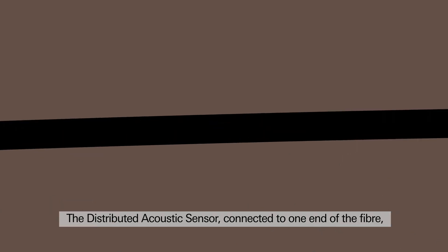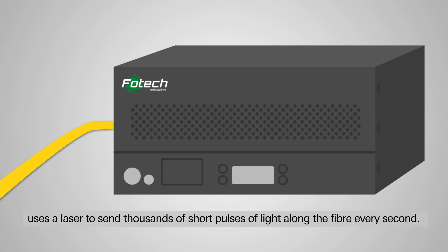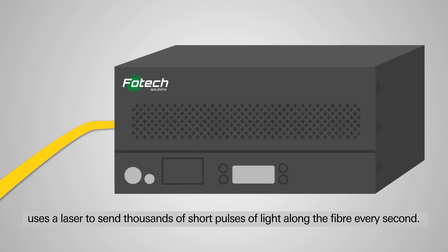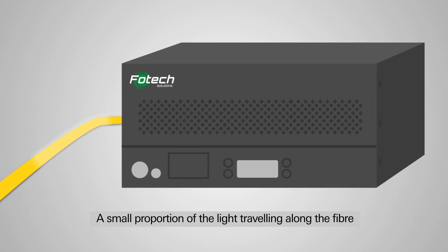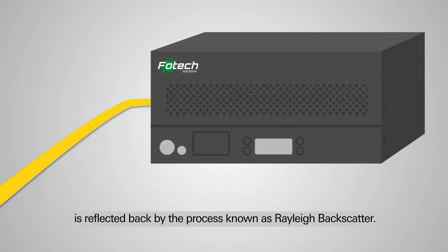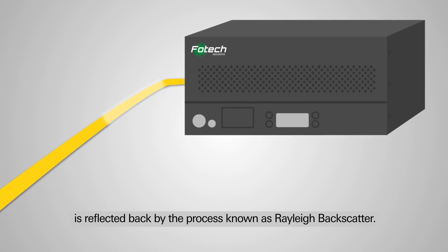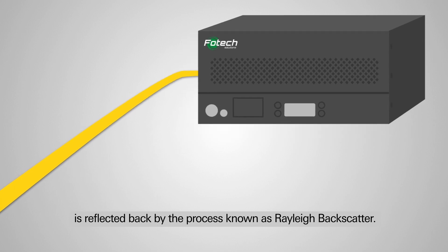The distributed acoustic sensor, connected to one end of the fibre, uses a laser to send thousands of short pulses of light along the fibre every second. A small proportion of the light travelling along the fibre is reflected back by the process known as Rayleigh backscatter.